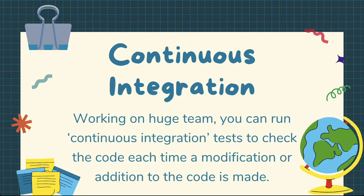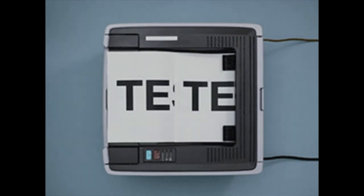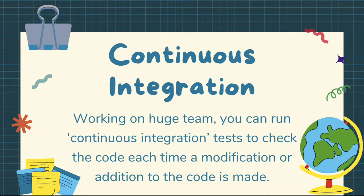That leads into something called continuous integration, where you can have automated checks running in the background. When you're working as part of a large team and a new developer comes on and changes something in the code — if they change something existing to something it shouldn't be — we can check this automatically and identify the problem straight away. We're not left scratching our heads wondering why or where the problem occurred.